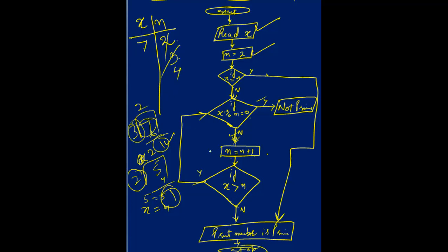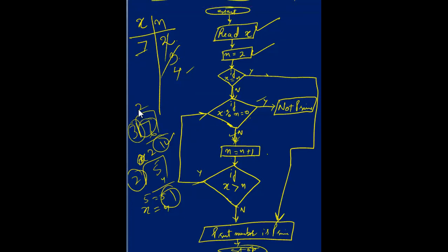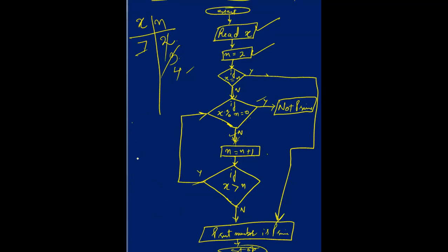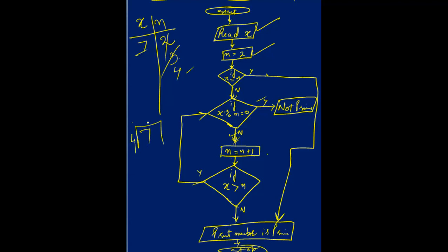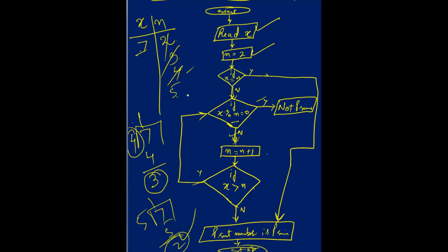Check if x is greater than n — 7 is greater than 5, yes. Loop back. Now x percent n: 7 percent 5 — 5 ones are 5, remainder 2. Not 0. Increment n to 6. Check if x is greater than n — 7 is greater than 6, yes. Loop back. Check x percent n: 7 percent 6 — 6 ones are 6, remainder 1. Not 0. Increment n to 7.